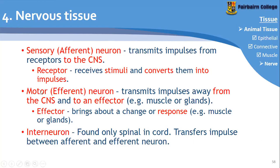The motor neuron, or efferent neuron, transmits impulses away from the central nervous system — away from the brain — to an effector. The effector is the thing that brings about a change or response, for example a muscle or a gland. If you want to tell your muscle to pick up something, your brain sends a signal to the muscle, the muscle contracts and picks it up. That's why it's called an effector — because it brings about an effect.